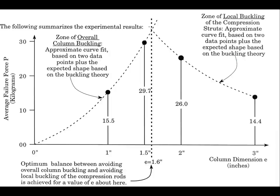Long before we see any overall buckling, we begin to see a snaky curve of the individual members — this is an example of local buckling. We've reached the point where the overall column is fat enough that it's not exhibiting overall buckling failure; the buckling failure is occurring in the individual parts. This diagram shows on the horizontal axis the width of the column: one inch, two inches, three inches.